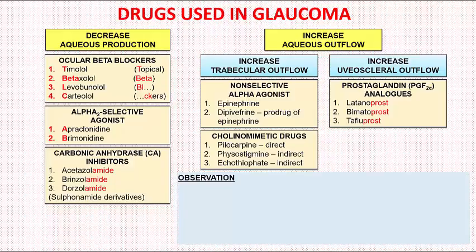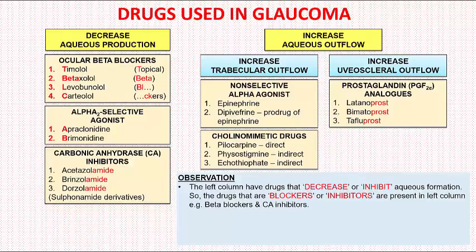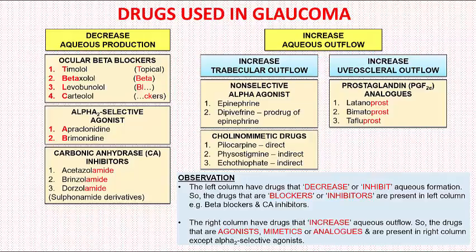We can make an observation to remember these drugs more simply. The left column contains drugs that decrease or inhibit aqueous formation — those which are blockers or inhibitors, such as beta blockers and carbonic anhydrase inhibitors. The right column contains drugs that increase aqueous outflow — those which are agonists, mimetics, or analogues. An exception to remember separately is that alpha-2 selective agonists are agonists but are present in the left column, as they decrease aqueous formation.